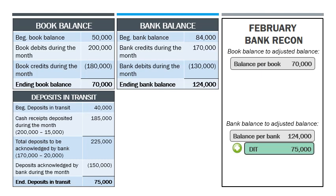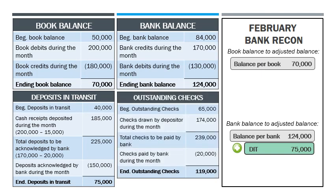To solve for the February outstanding checks, the formula is: beginning outstanding checks, add checks drawn by the depositor during the month, equals total checks to be paid by the bank. This is because outstanding checks from the previous period are expected to be reflected in the bank's records in the current period along with checks drawn during the current period. Then: total checks to be paid by the bank less checks paid by the bank during the month equals ending outstanding checks.